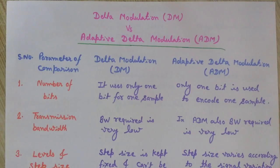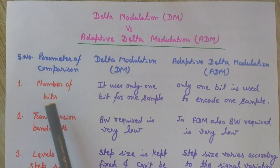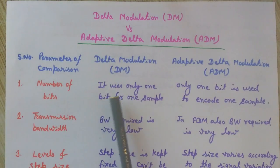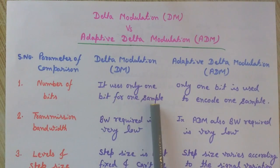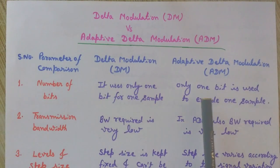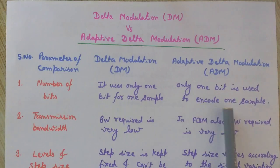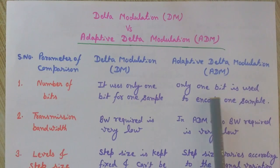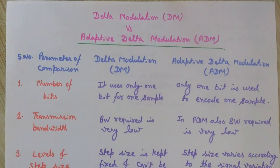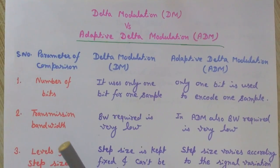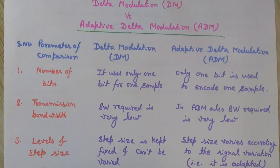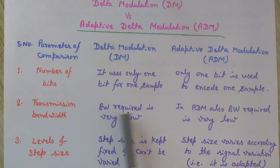Now let's compare these two techniques based on various parameters. Number one: the number of bits. Delta modulation uses only one bit for one sample, and similarly only one bit is used to encode one sample in adaptive Delta modulation.